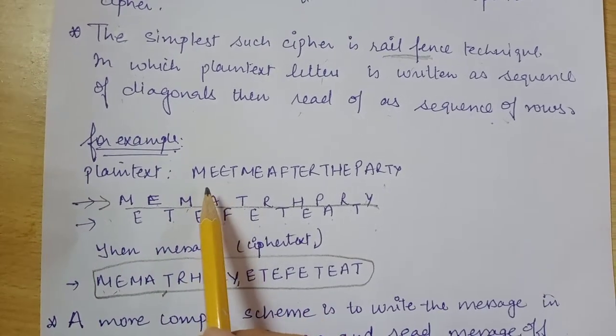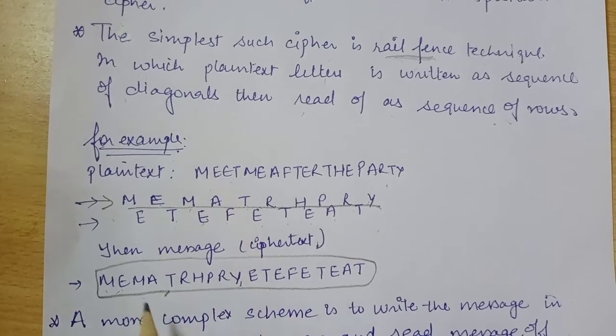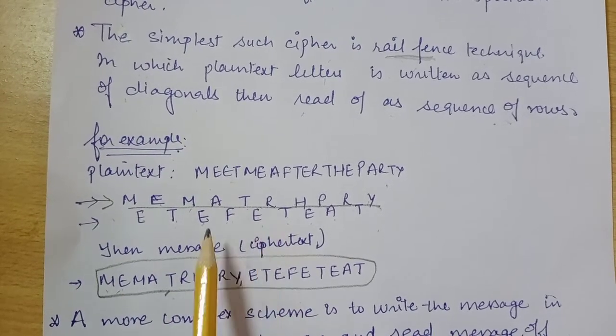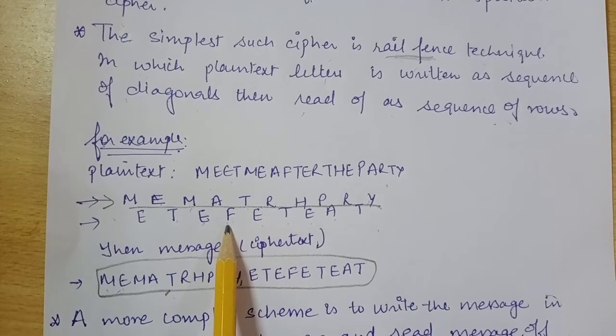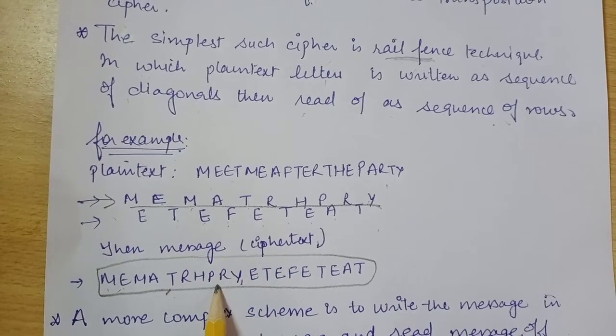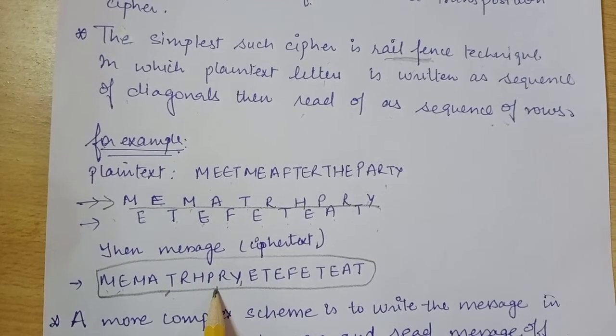Now what is the main principle here is we have not changed any letter - whichever letter was in our original plain text, that is in our ciphertext, but we have just changed their position. We have done permutation. So this is the simplest technique called rail fence, but it is very easy to break if you are using only two rows.